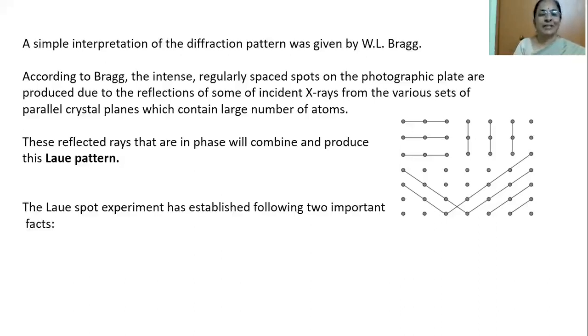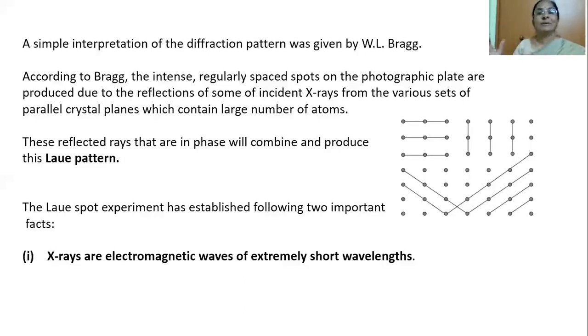The Laue spot experiment has established two important facts. X-rays are electromagnetic waves of extremely shorter wavelength. How could this be predicted? Only light rays can cause shadows. Now, X-rays have caused shadows of atoms on the photographic film. So, X-rays are also similar to light rays. That means electromagnetic rays. And how could the short wavelength nature could be predicted? A crystal is producing this diffraction pattern. The space between the atoms in the crystal is very, very, very small.